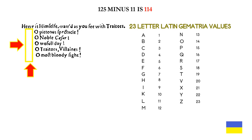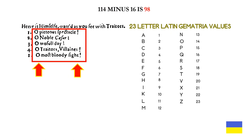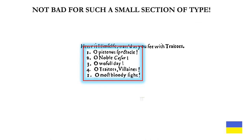Recall also that we can subtract things that are different from a set from a sum. 114 minus the 16 words in this little section is 98. We have seen 98 countless times as a digit sum number alluding to the real author of the plays. 9 plus 8 is 17. Not bad for such a small section of type.